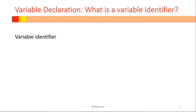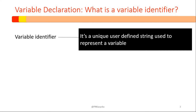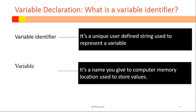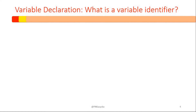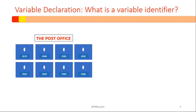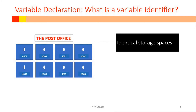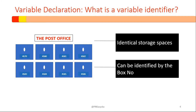We begin by asking ourselves what is a variable identifier. A variable identifier is a unique user-defined string used to represent a variable. A variable is a name given to a computer memory location used to store values. Let's take the analogy of a post office box. All the boxes have the same size, that is identical storage space, and can only be identified by a box number. The same logic is applied when we create variables.